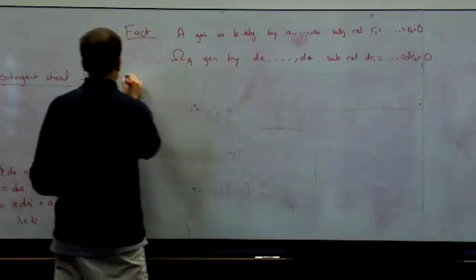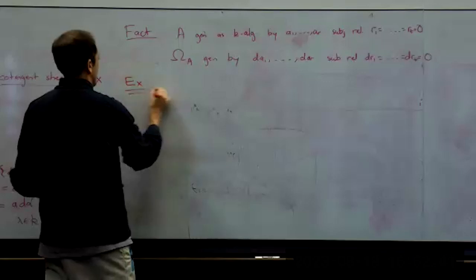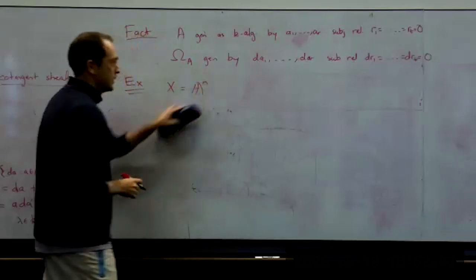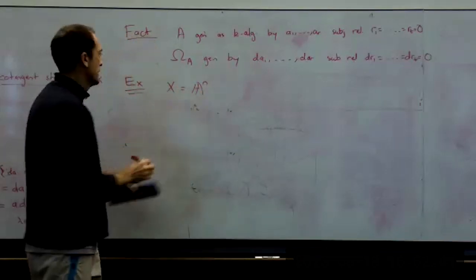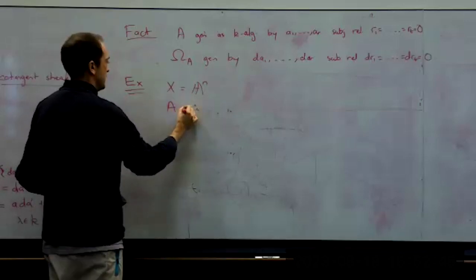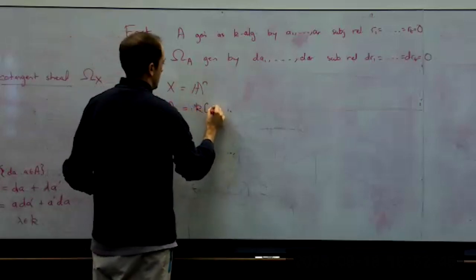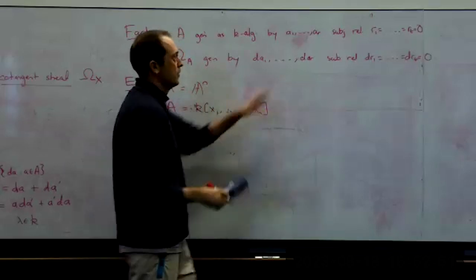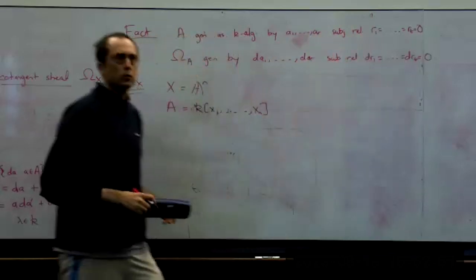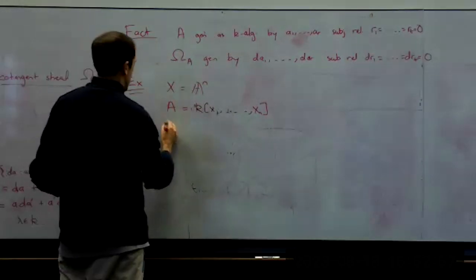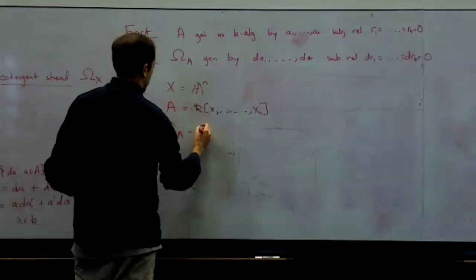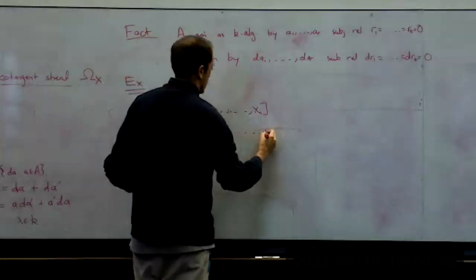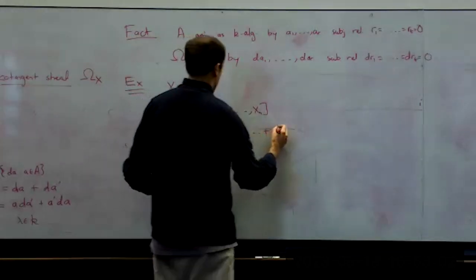The easy example: X is affine n-space, A is the polynomial ring k[x_1,...,x_n]. There are generators x_1,...,x_n and no relations, so Omega_A is just the free A-module generated by dx_1,...,dx_n — i.e., A^n. But we need to find our example to justify this additional abstraction — we're not just wasting time because we already understand affine space.